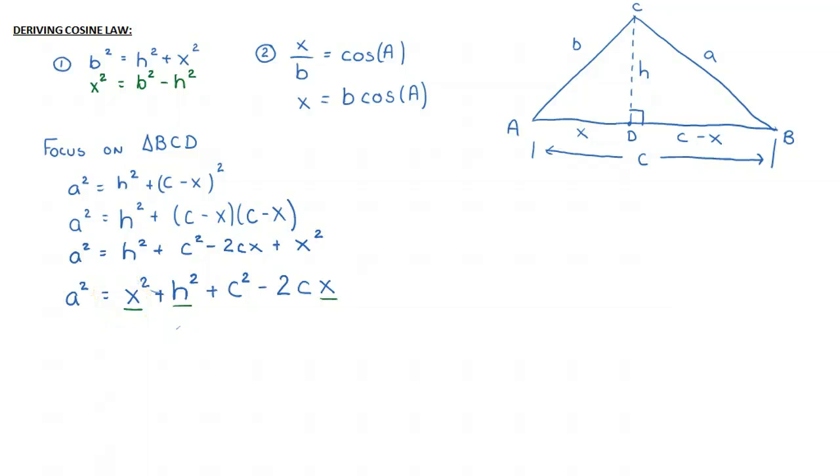And so now, if I come down into my current working space, I can say A squared is equal to, and instead of X squared, I'm going to put B squared minus H squared. And then this is plus H squared plus C squared minus 2CX. And what I notice now is that the H squared, if I have minus H squared and plus H squared, they cancel out. So I end up with A squared is equal to B squared plus C squared minus 2C.